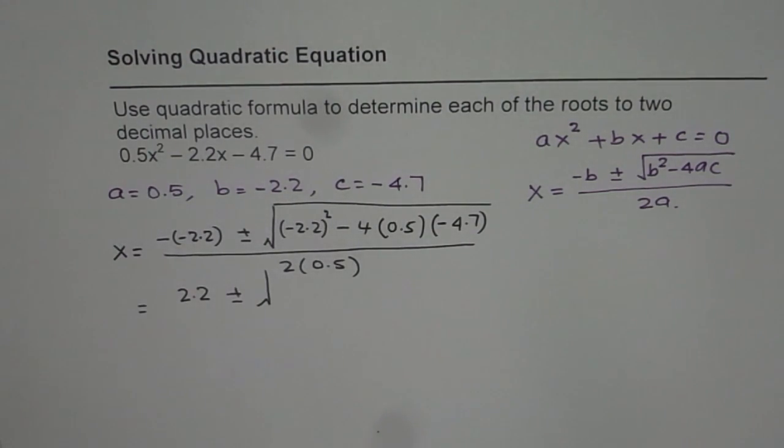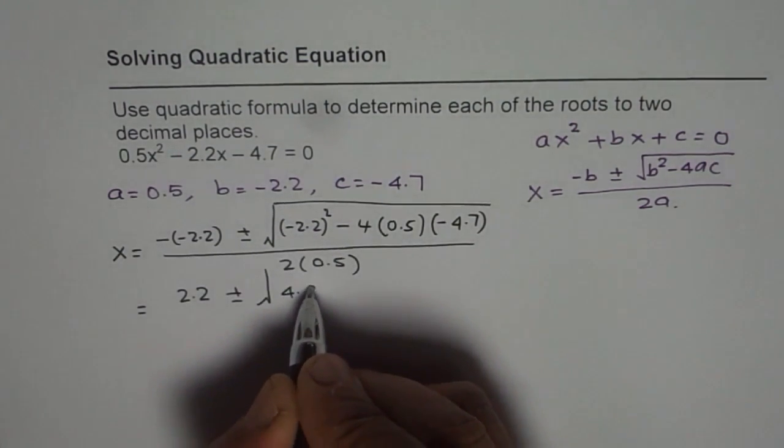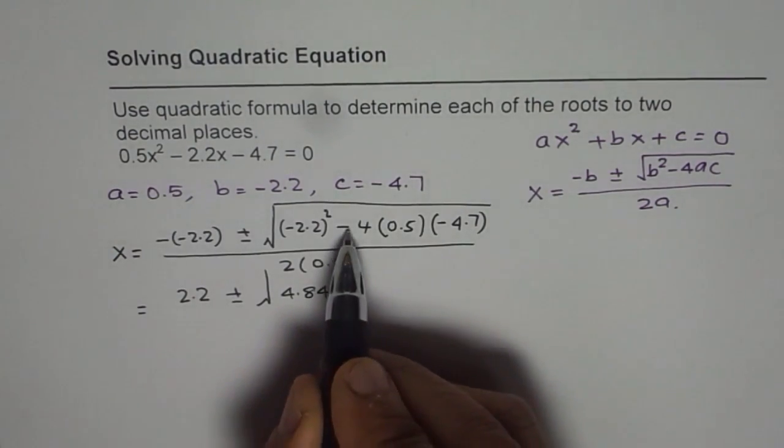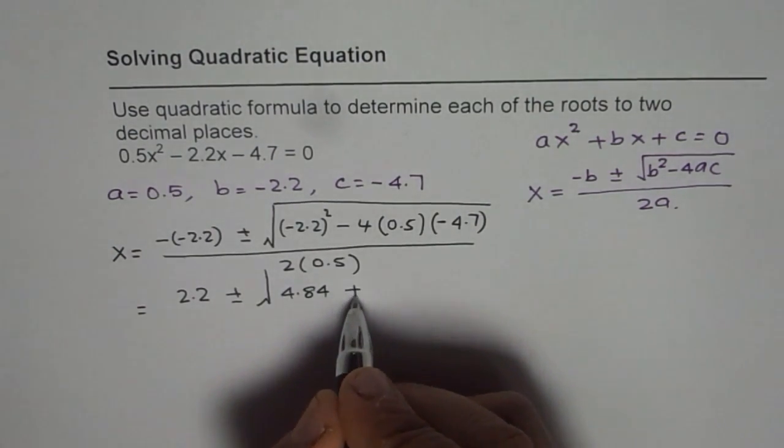2.2 square equals to 4.84. Minus and minus becomes plus.